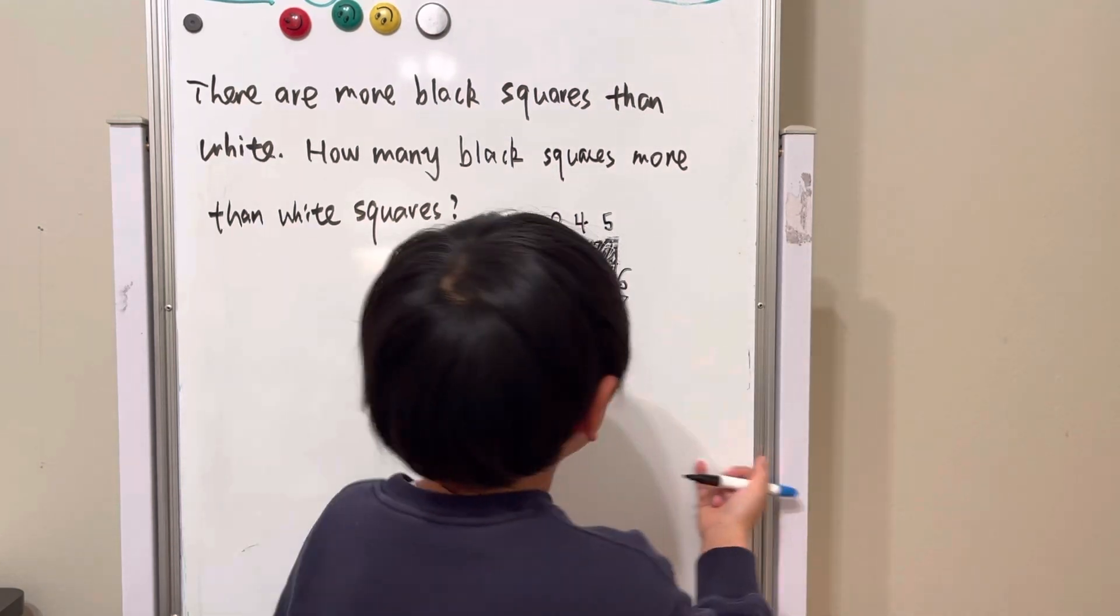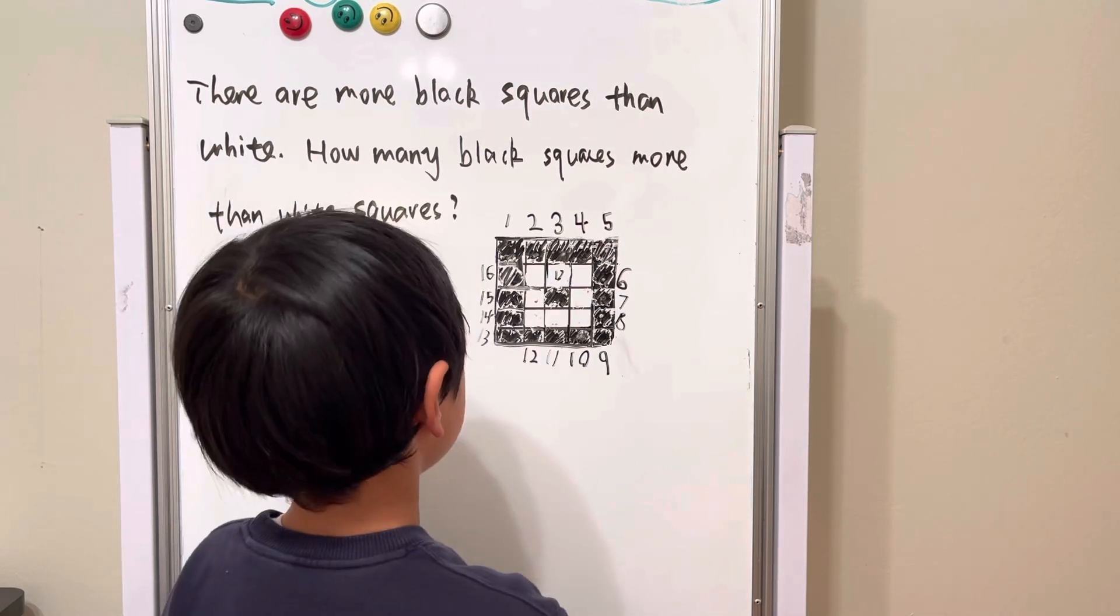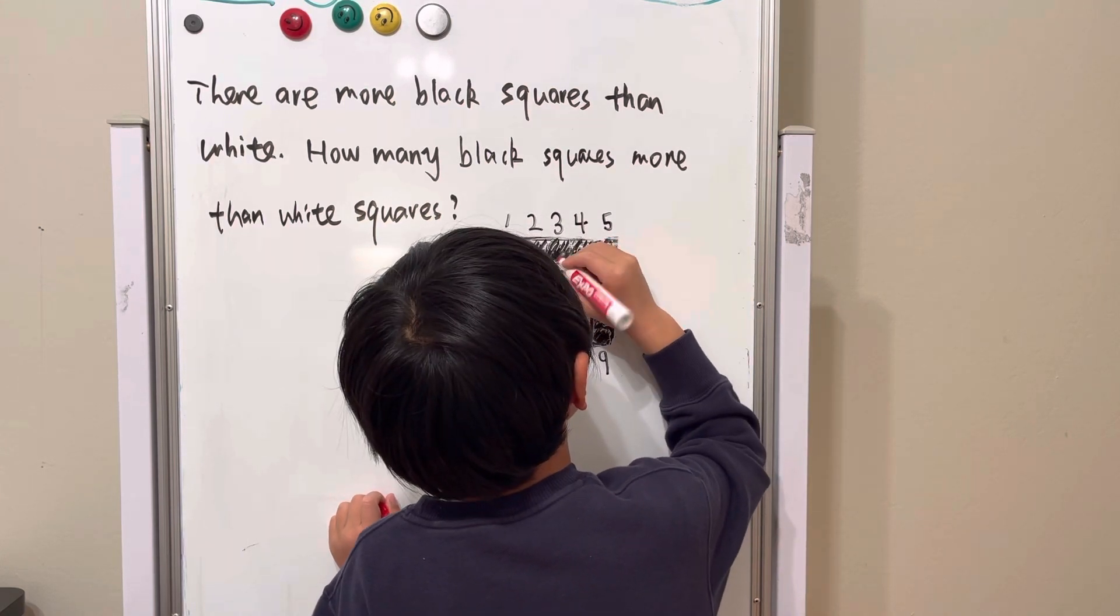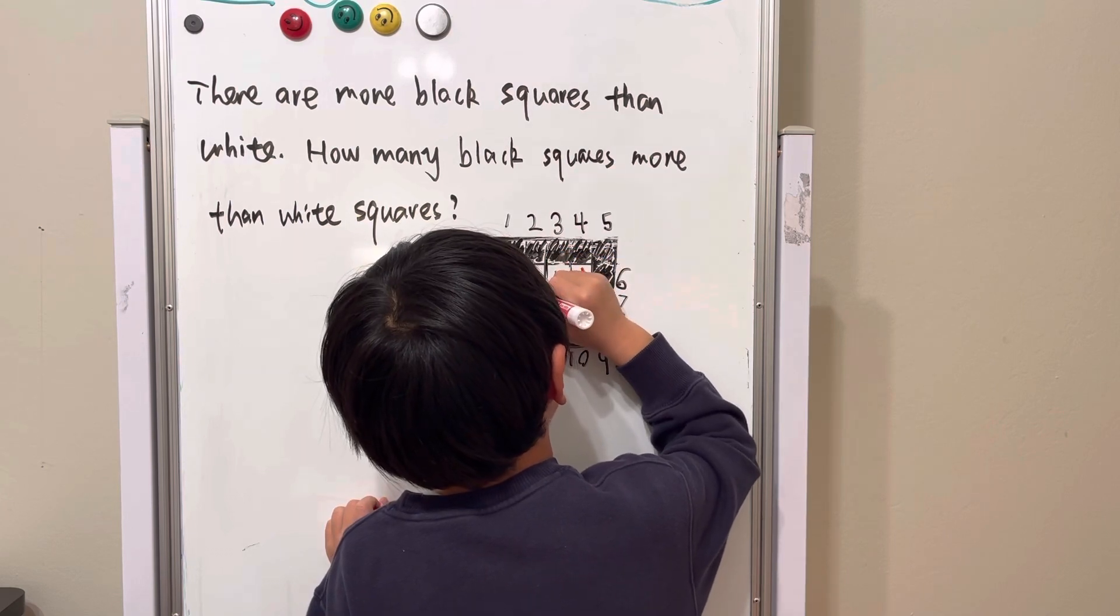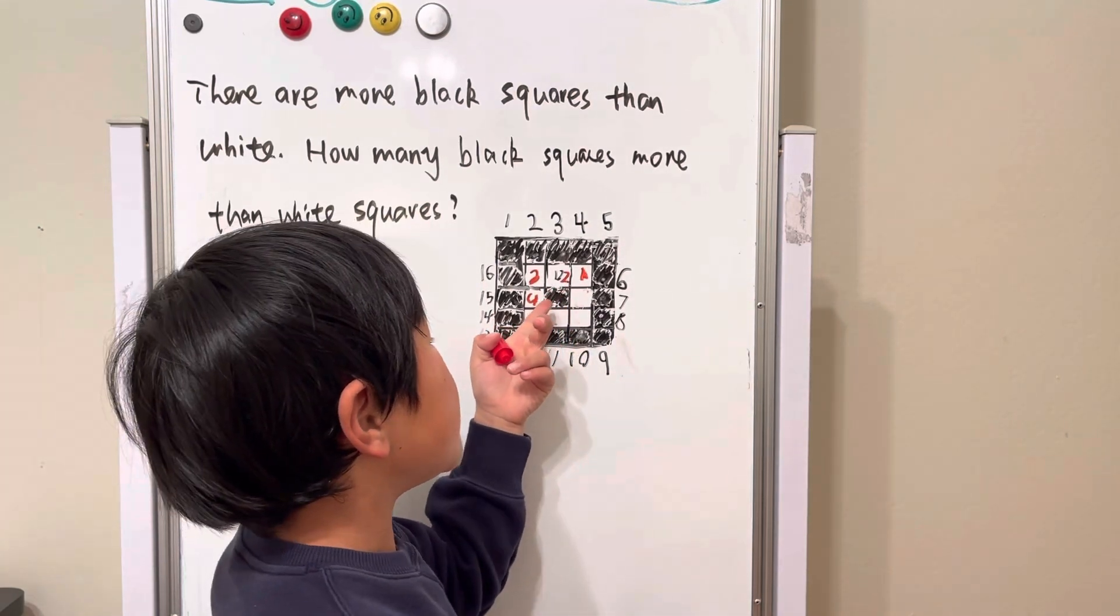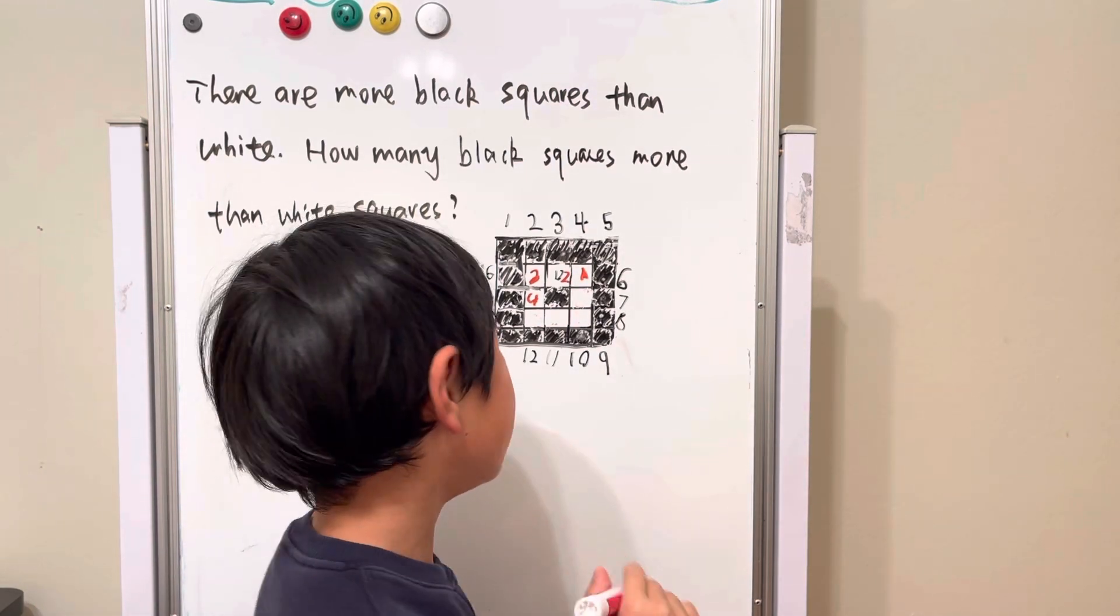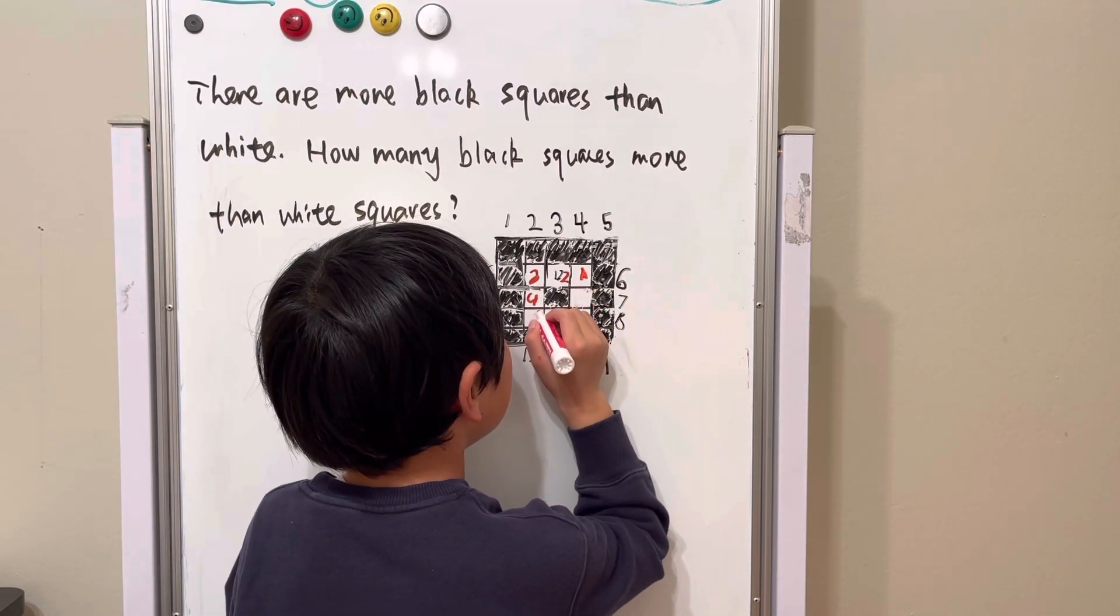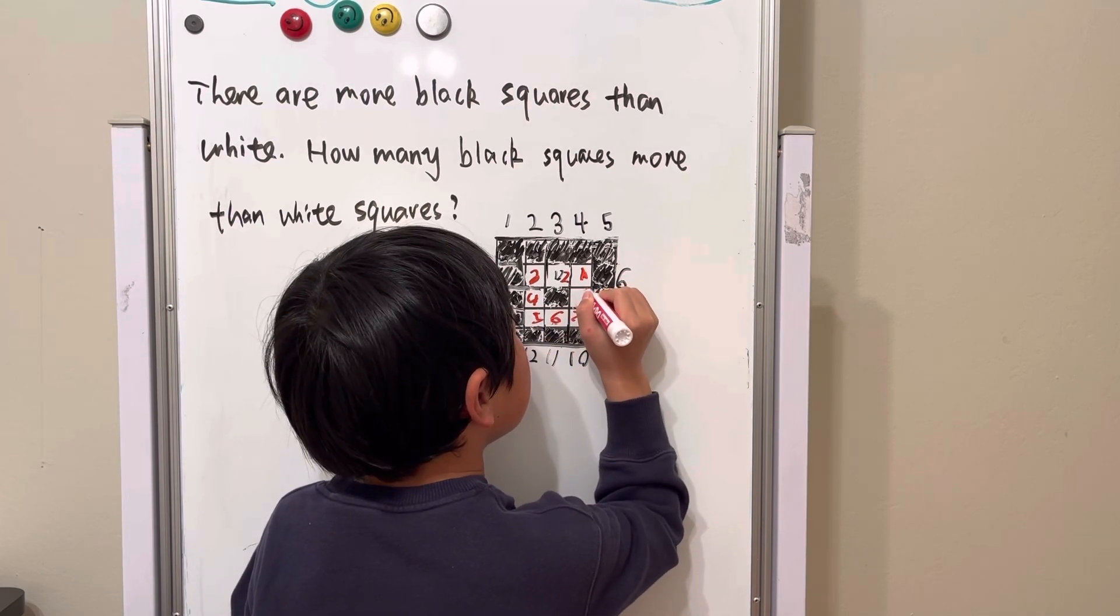So, let's count the white squares. One, two, three, four. I'm doing red so you don't get mixed up with this square with this. So, I'm doing a different color. One, two, three, four, five, six, seven, eight.